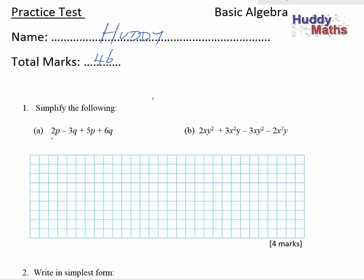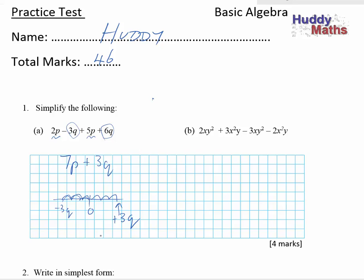Simplify the following. Let's pick out the terms that are like each other. So 2p plus 5p would be 7p. And now the q's: negative 3q plus 6q would be positive 3q. Let's just check that on the number line. If we went negative 3q down there, and then plus 6q, that would end up as positive 3q. Remember, negative in math means opposite direction.